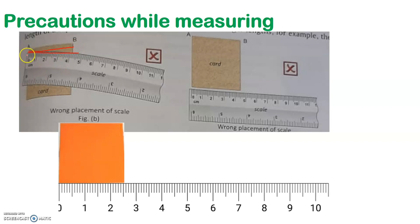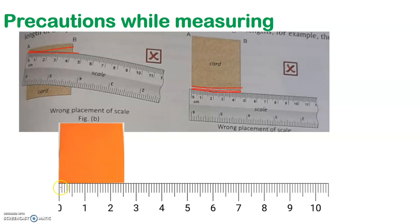Your eyes should be exactly on top of the scale — exactly on top of the marking — then only you will get the correct reading from the scale. The next thing is that you should not place the scale at a distance from the object you want to measure. There should not be any gap between the scale and the object. It should always be close to each other, so you can mark the points on the scale exactly with the two ends of the object you are measuring.